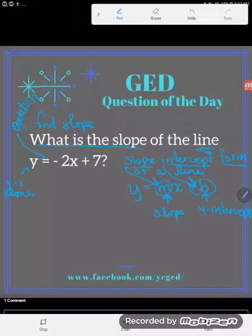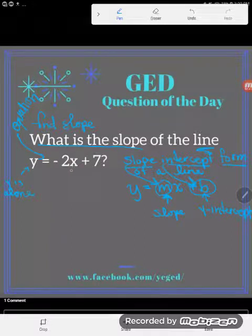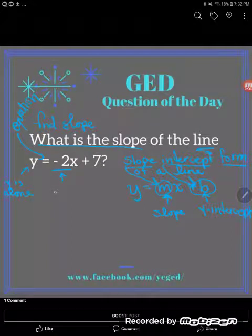So what does that mean to us? It means that whatever number is the coefficient on x, whatever number is out front of x, this number right here, is my slope.